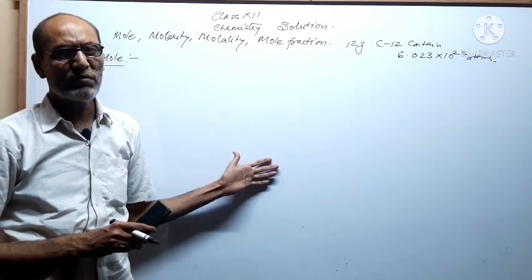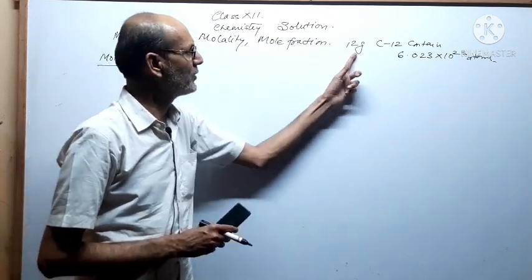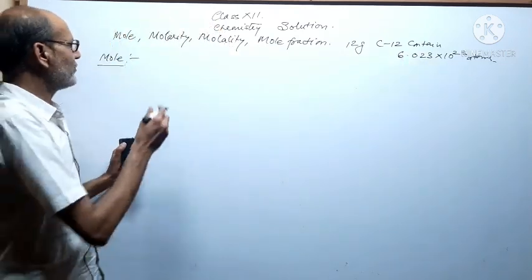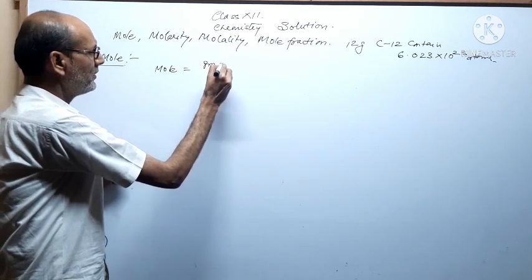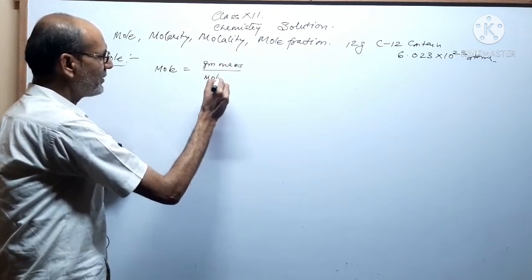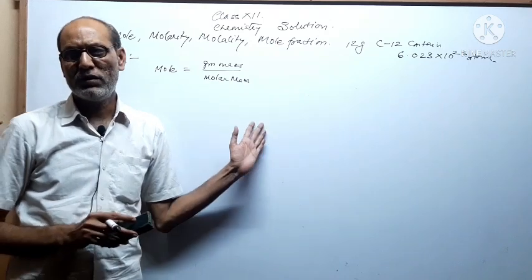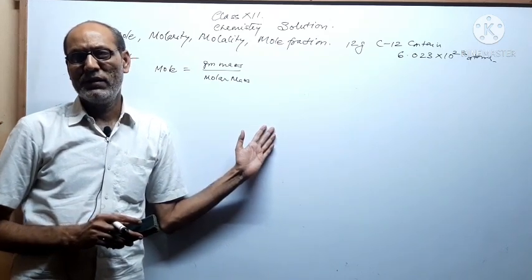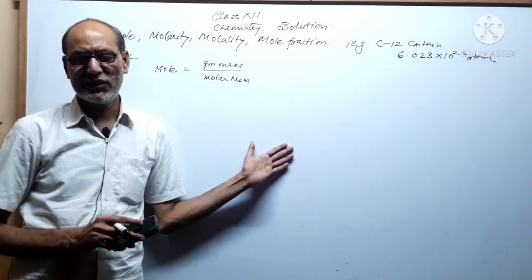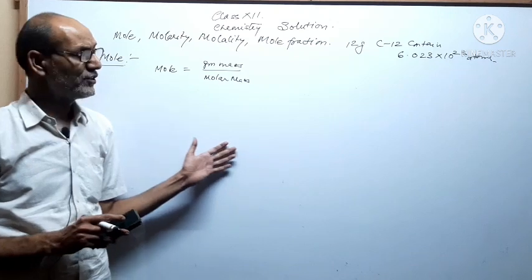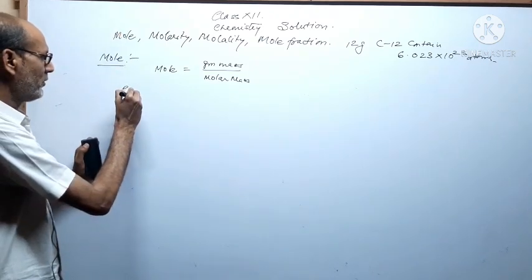Mole is the amount of substance which has equal entities as 12 gram carbon-12 contains. The formula to calculate the number of moles: moles = gram mass / molecular mass (or molar mass). Every substance has a molar mass — for example, H₂SO₄ has a molar mass of 98, which is the sum of atomic masses of all elements present in it.